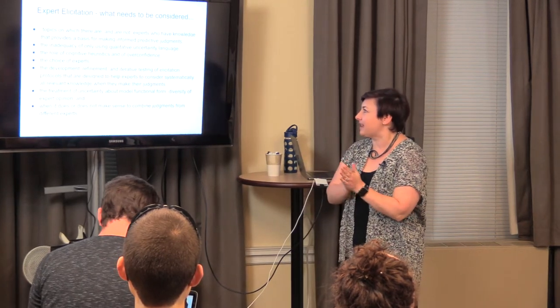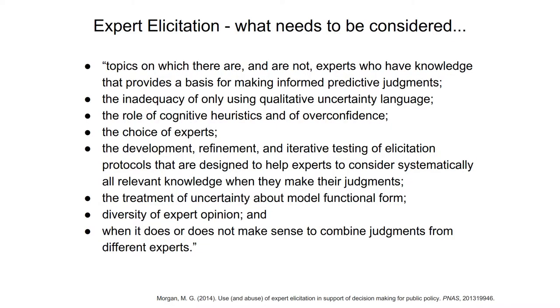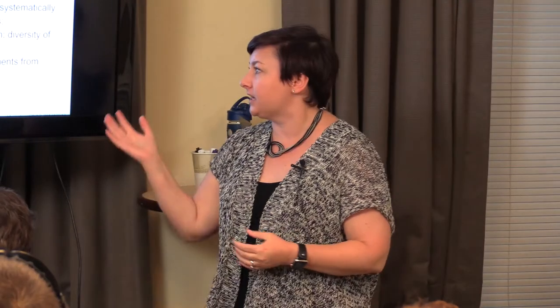You want to be aware of the heuristics that typically arise when working with people, and keep those in mind so you can minimize or mathematically correct for biases like overconfidence. You want to choose experts carefully, think about protocols, and include calibration checks and ways of validating. Think carefully about uncertainty of functional form and the diversity of experts so you're not creating a representation that's too narrow. Also think carefully about combining expert judgments — sometimes aggregating probability distributions across experts works perfectly well, and sometimes it doesn't make sense, similar to how some ecosystems can be aggregated and some need to be treated independently.